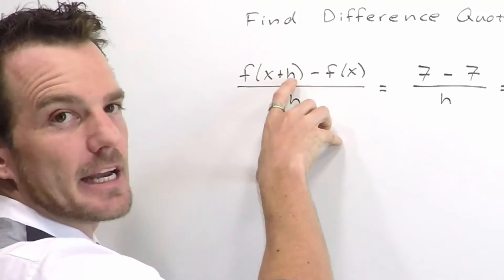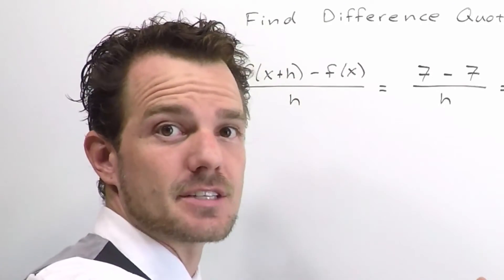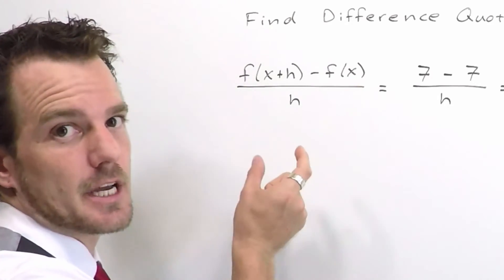and f of x plus h tells us go to the original. Replace every x that's in the original with a set of parentheses and x plus h.